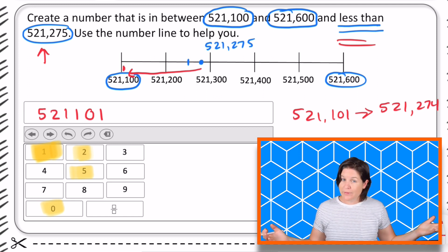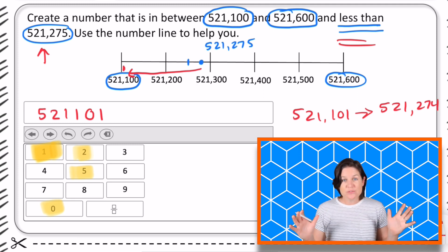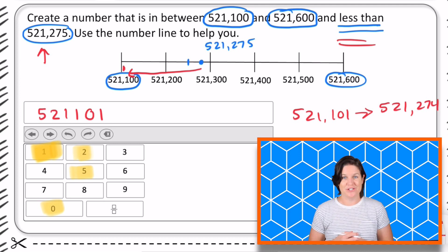Again, without the comma, you don't have a way to put the comma in. So don't try, don't put a decimal in. Just leave it as those six digits.